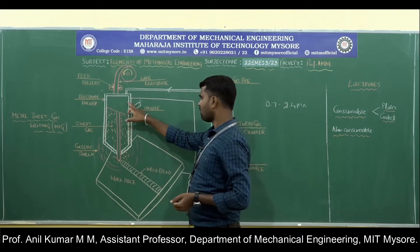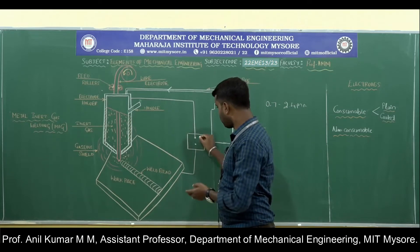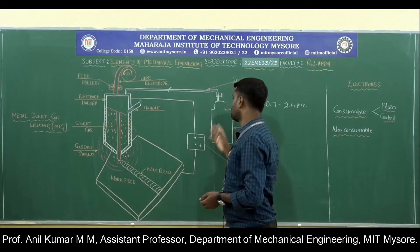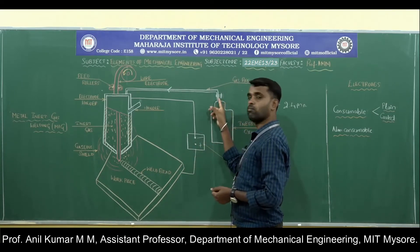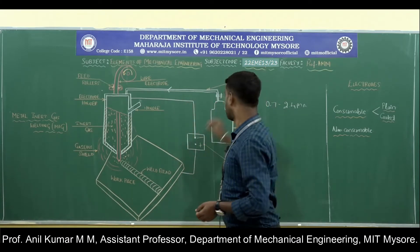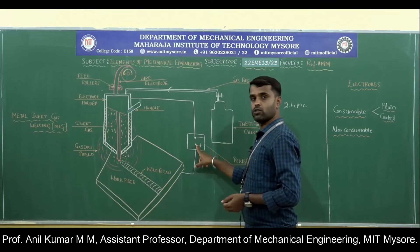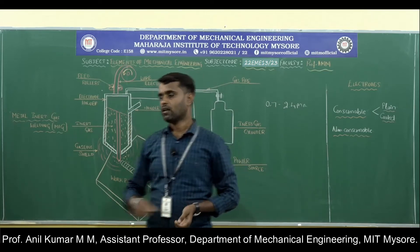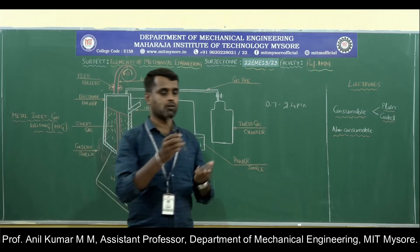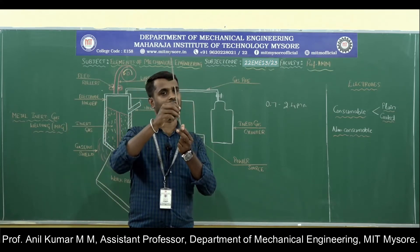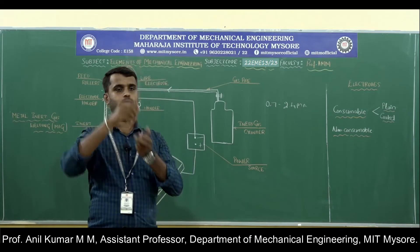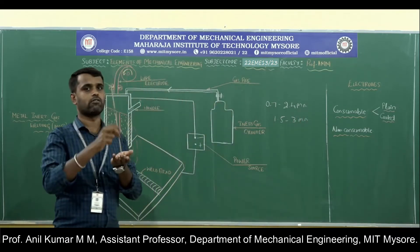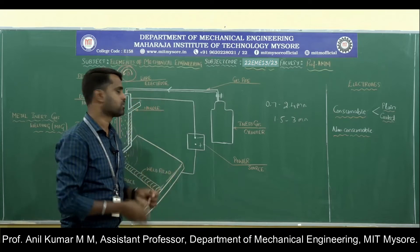The electrode is connected to the negative terminal of the power source and the workpiece to the positive terminal. When the power source and cylinder are turned on, a pressure regulator controls the flow rate of the inert gases. Current flows through the electrode and workpiece. Bring the electrode closer to the workpiece surface, touch it, then separate by a small gap of around 1.5 to 3 mm. At that point, the electric arc stabilizes.